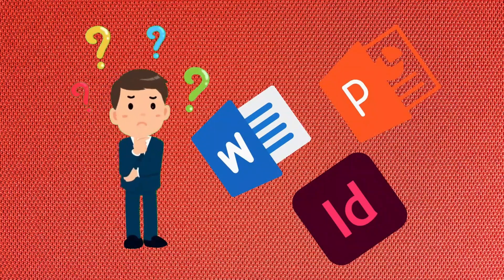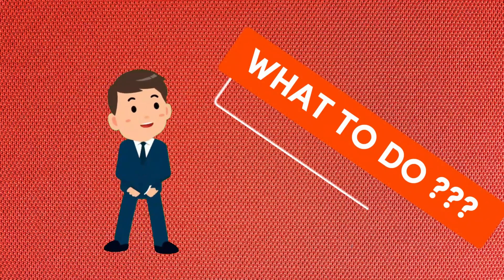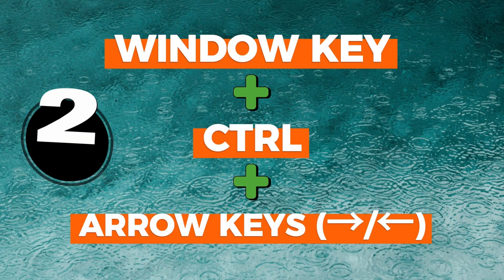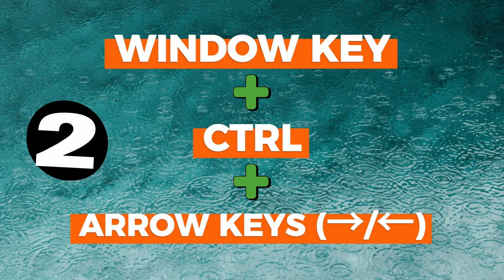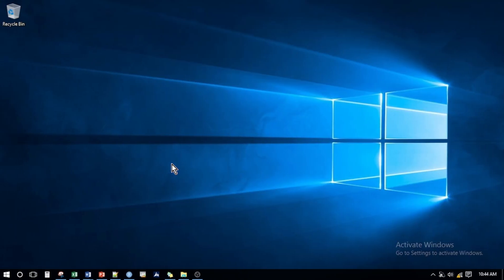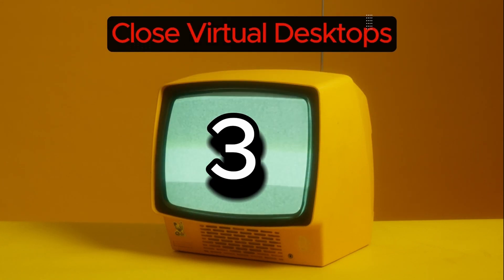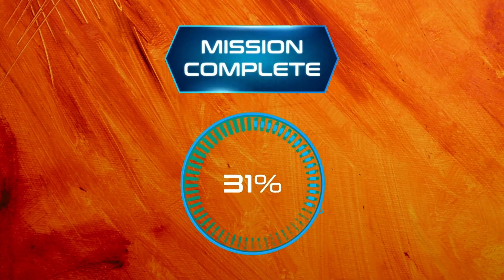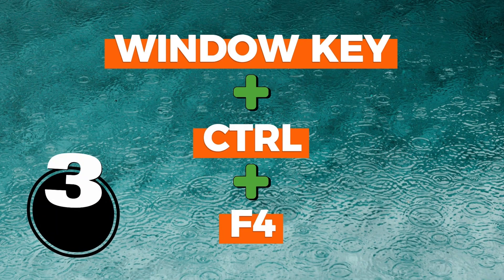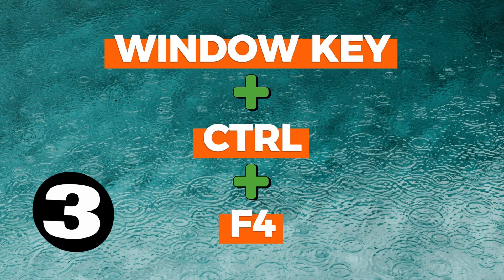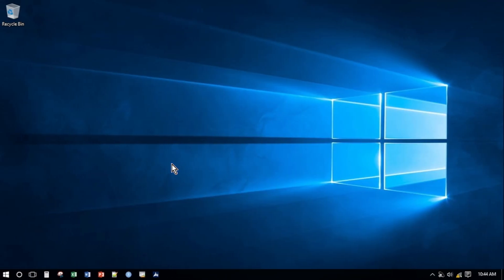Number two: switch between virtual desktops. If you got worried after applying shortcut number one and you think all of your opened worksheets and apps are gone, don't worry — press Windows key + Ctrl + Left or Right arrow keys to switch between multiple desktops. Number three: close virtual desktops. If your task is complete and you want to close the virtual desktop, simply press Windows key + Ctrl + F4.